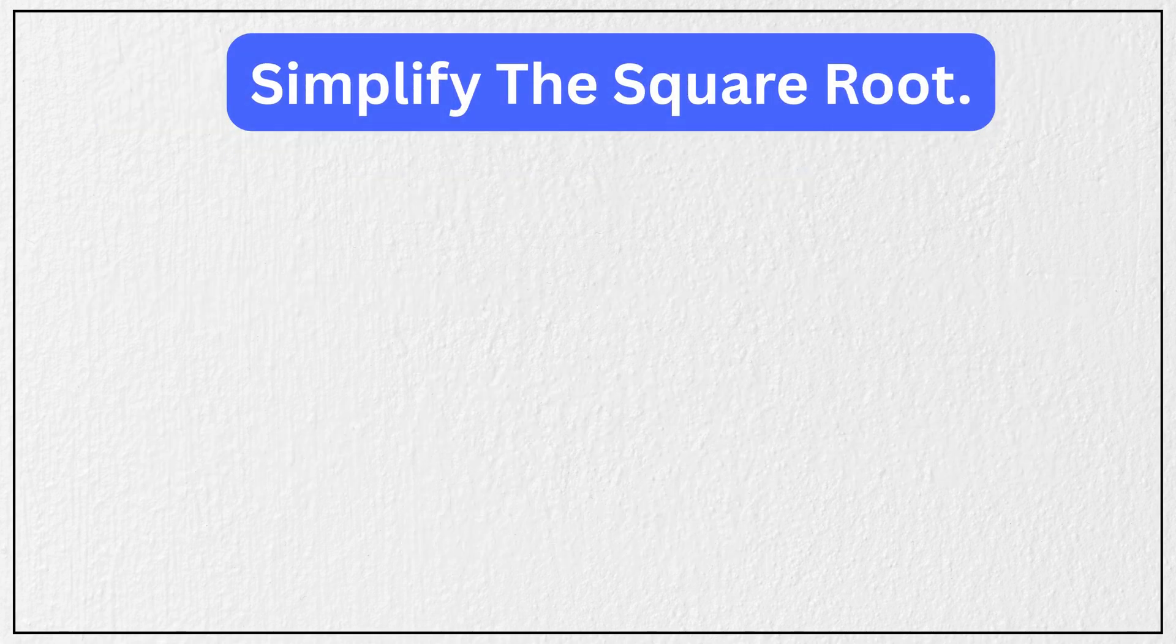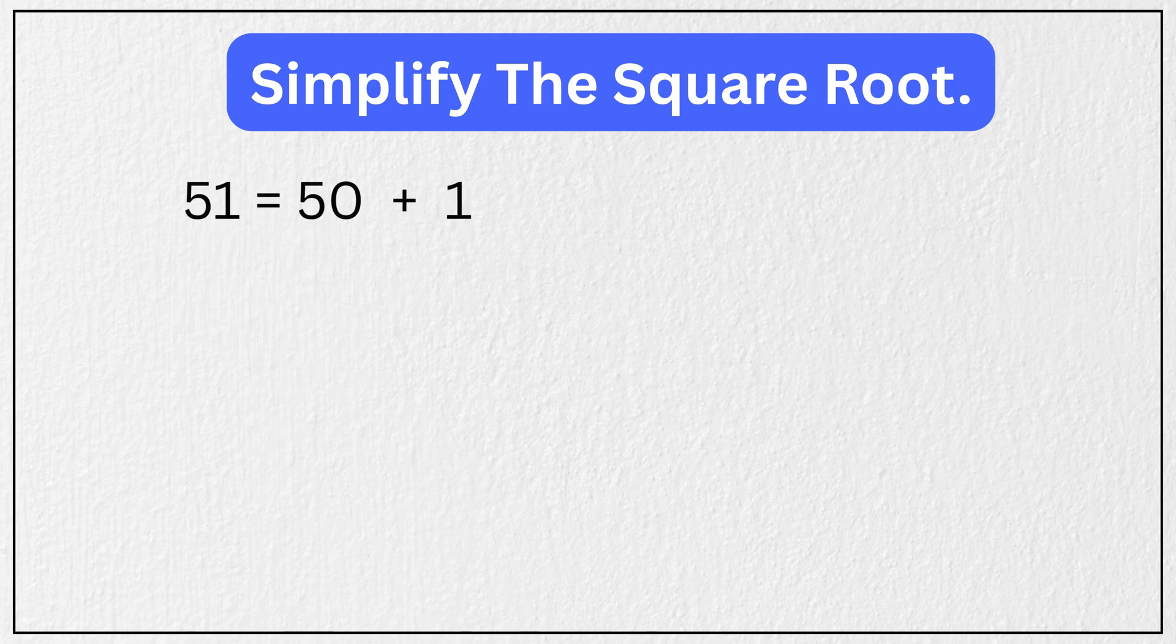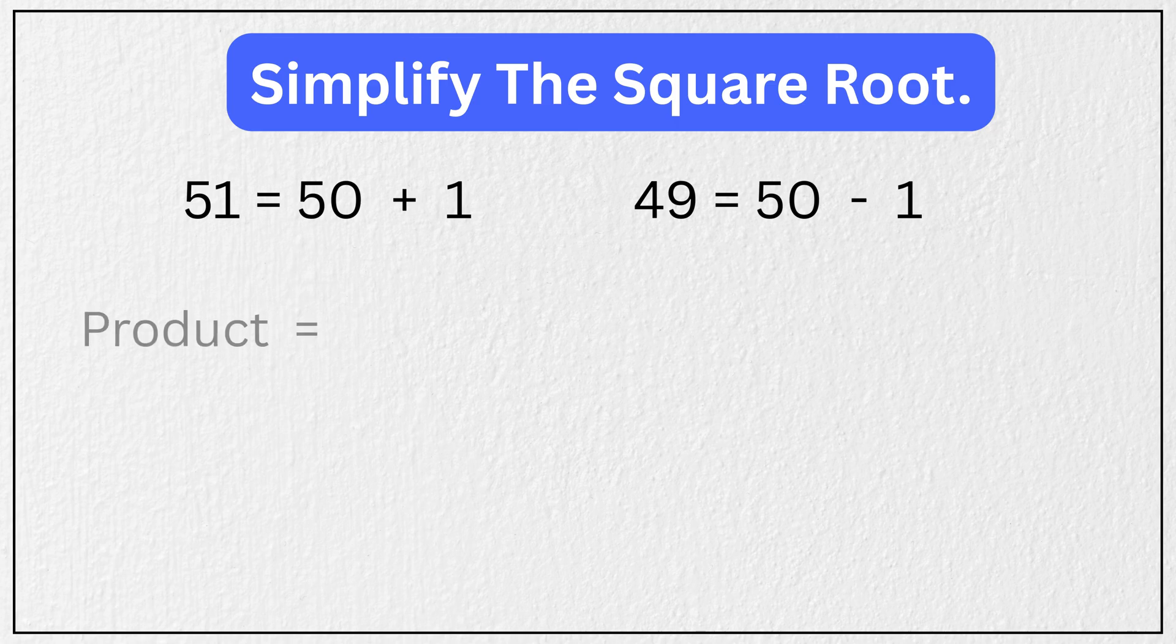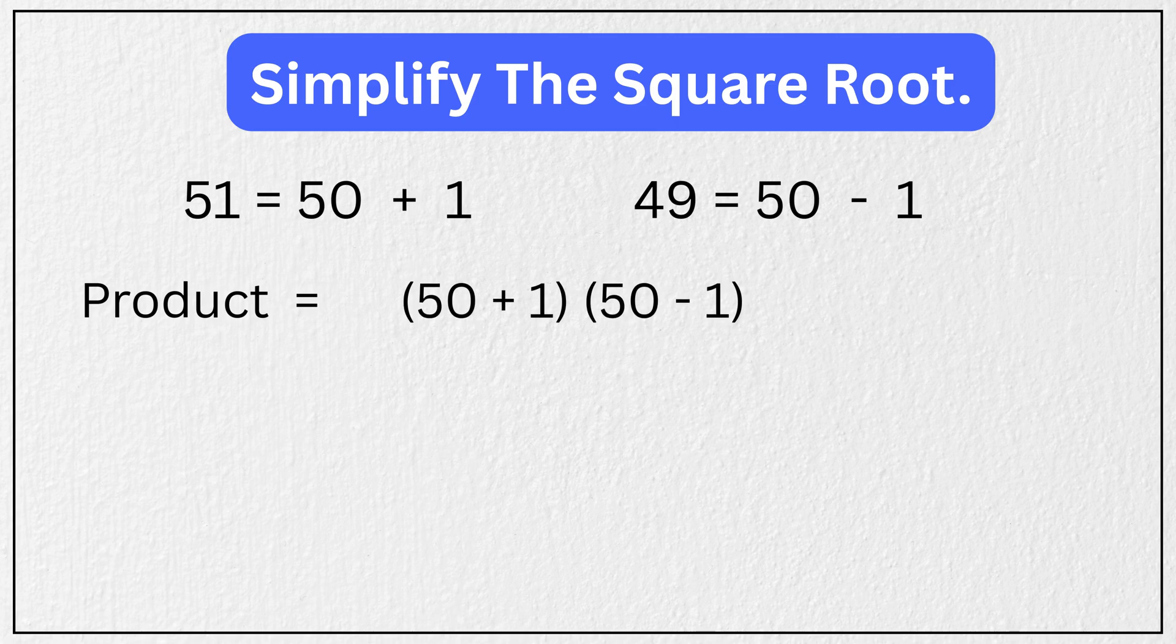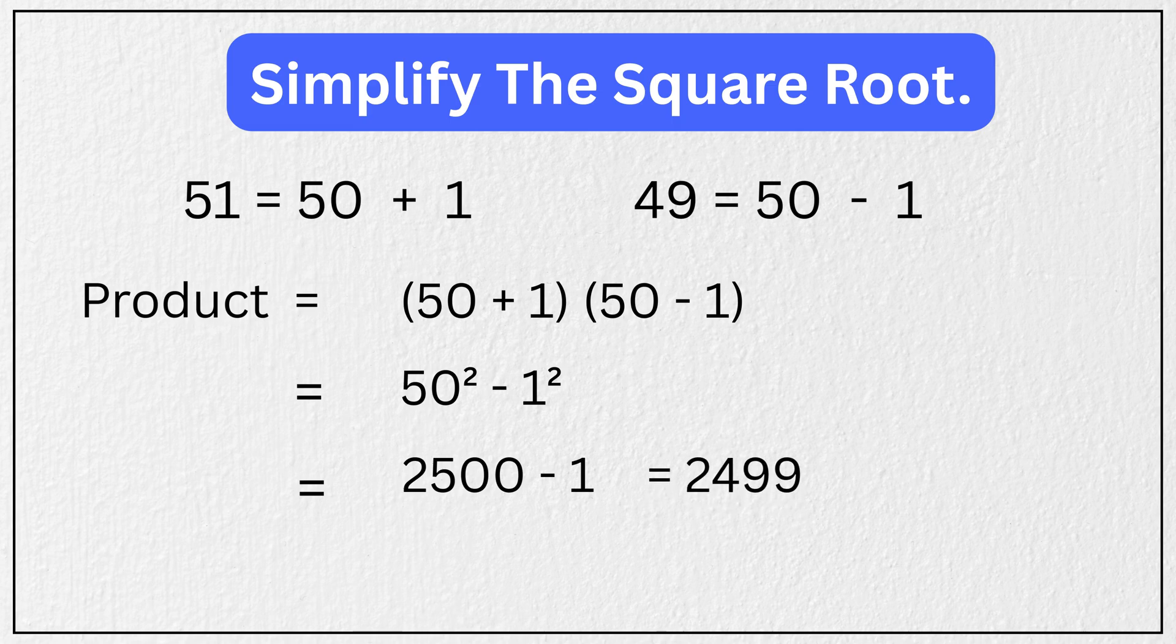Now, let's simplify the square root. 51 is 50+1 and 49 is 50-1. So their product is (50+1)(50-1) = 50² - 1² = 2500 - 1 = 2499.